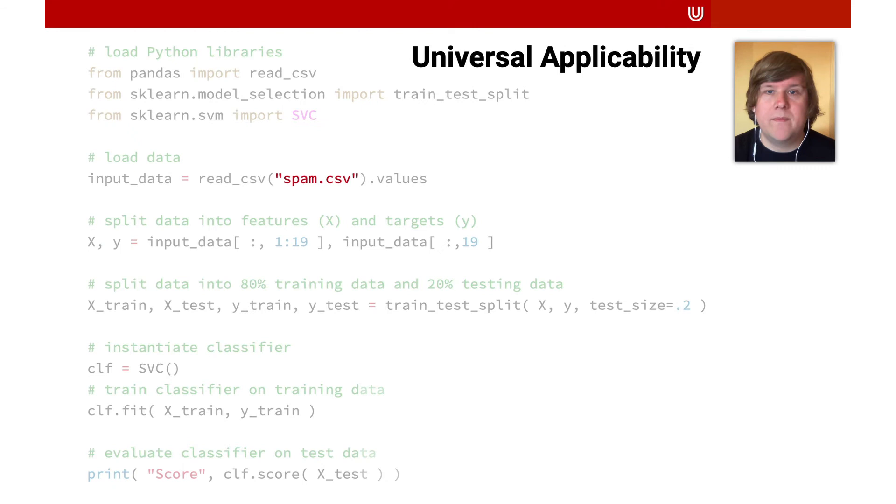Another problem that we discussed in the paper is the idea of universal applicability. To change the spam filtering system into a cancer screening tool, we only need to change the input data from spam.csv to cancer.csv. The same code could also be used to build a system that helps car dealers select which cars to buy. We discussed this universal applicability and its implications in detail in the paper.